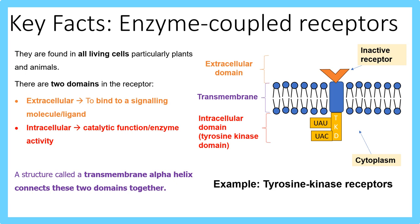A key example of an enzyme-coupled receptor is the tyrosine kinase receptor. The enzyme activity consists of the tyrosine kinase domain. Each amino acid has its own coded value — tyrosine is coded by UAU and UAC.